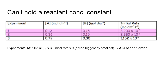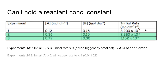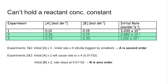The problem now is that we can't hold the concentration of A constant. Using experiments 2 and 3, since we know A is second order and its concentration doubles, the rate should go up four times from that effect alone. Multiplying by 4 gives 0.01152 — that's what the rate should be due to A only. Looking at B next: B doubles, but the rate stays at 0.01152, so B is not having any effect on the rate — it must be zero order.